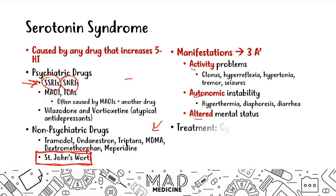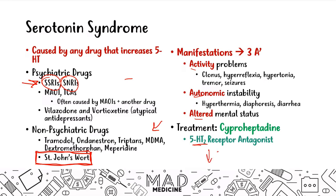When treating these patients, you want to give a drug called cyproheptadine. Cyproheptadine is a serotonin 2 receptor antagonist, which blocks the serotonin 2 receptor, allowing for decreased 5-HT binding, and that will help treat these symptoms. Even though you have increased levels of serotonin, because it can't bind to the receptor, you won't see the effects playing out.